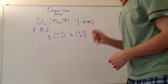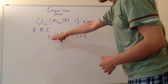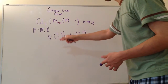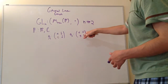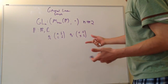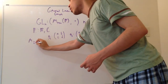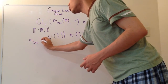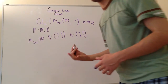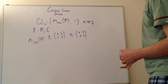So let's show this as a group. Let's denote our elements g1 and g2 as elements of this group. I'm just showing it for 2-by-2, and let's just work with the reals for now. It works just as well for complex numbers, but let's just work with the reals.